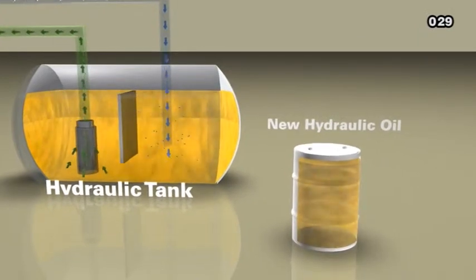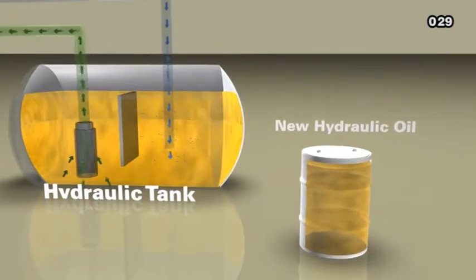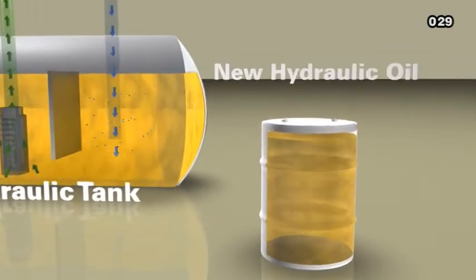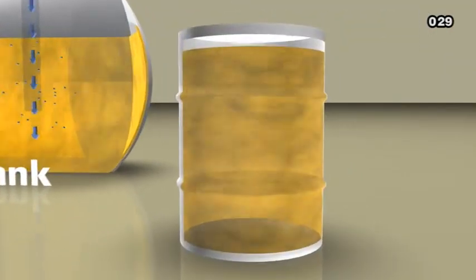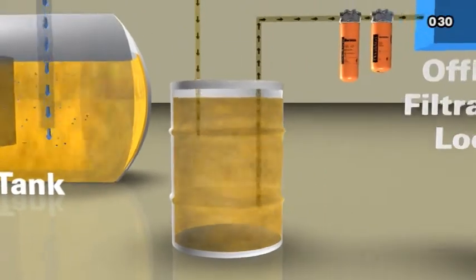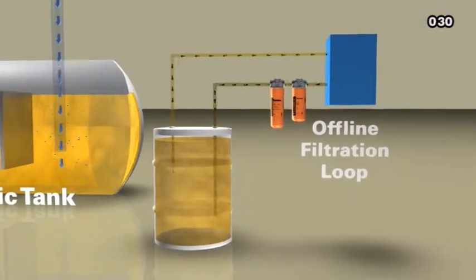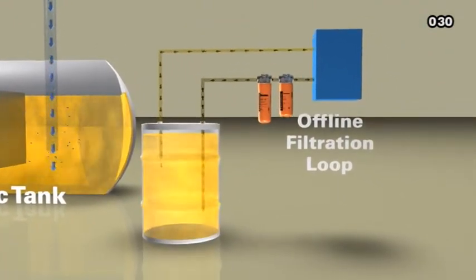At an approximate ISO cleanliness level of 21/19, it is significantly higher, that is, less clean, than OEM standards. This has prompted a leading global heavy equipment manufacturer to recommend filtering new oil before pouring it into the hydraulic tank.